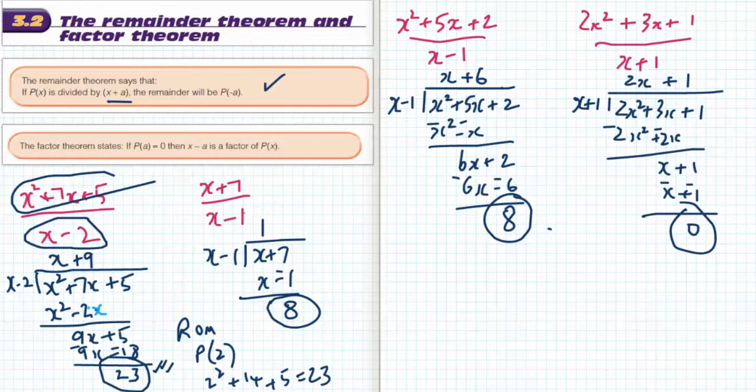Let's see if it works in this case. If I'm dividing by x minus 1, therefore P of 1 should equal the remainder. If I put a 1 where x is, I get 8, and that's exactly what the remainder is.